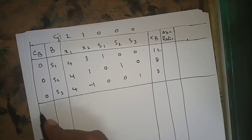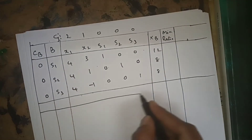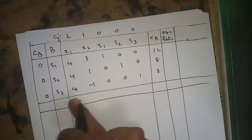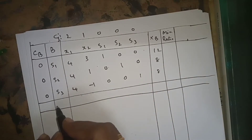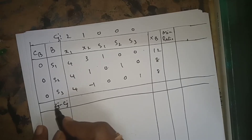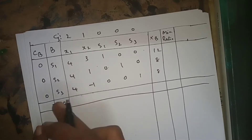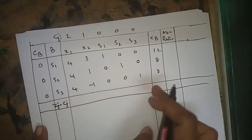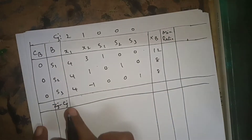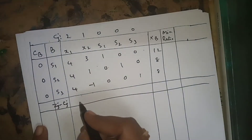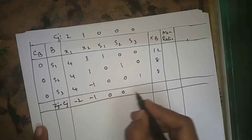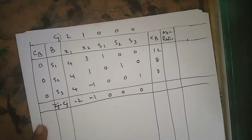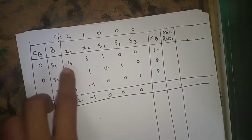After filling the table, we draw one more row called the index row. The formula to calculate index row elements is zj minus cj. This is the initial table, so we will get: minus 2, minus 1, 0, 0, 0 for the index row, and 0 for the RHS.